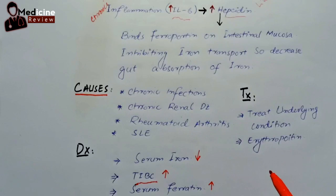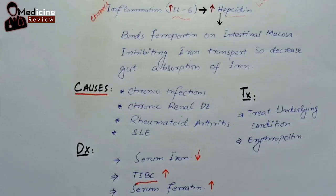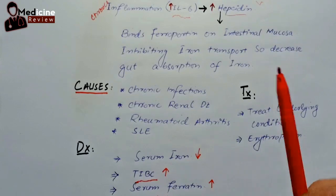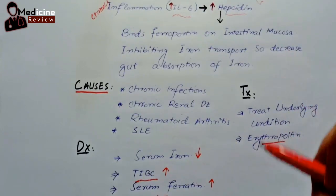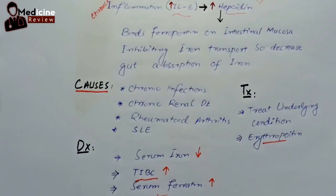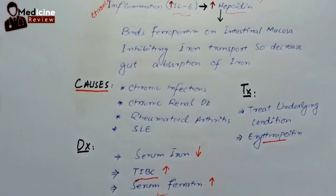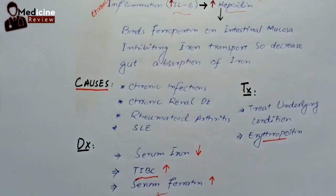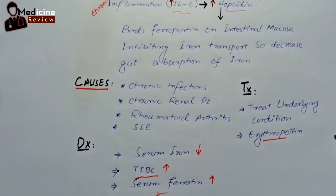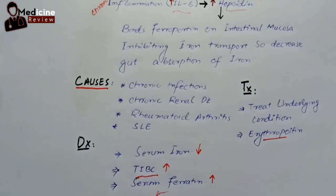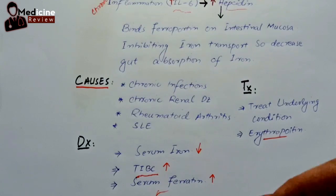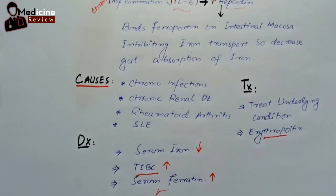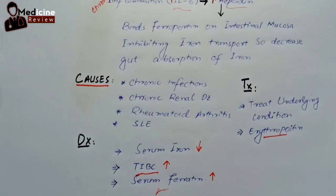Another option is supportive management with erythropoietin injections to stimulate red blood cell production. An important point: whenever you give erythropoietin, never give a second shot before one week, because erythropoietin takes almost one week for its full effect. Do not check the CBC after two or three days and give another shot — this will ultimately worsen the patient by causing polycythemia. That was all about anemia of chronic disease. Thank you so much.